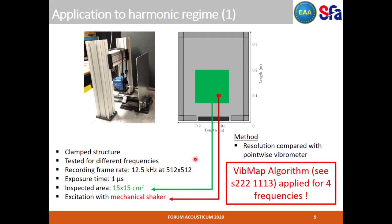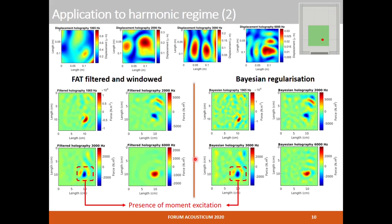The algorithm discussed in the previous talk permits to retrieve the operational deformations of the structure under harmonic excitation. To check if the proposed approach is adapted, the vibrations of a plate are measured for a set of four frequencies up to six kilohertz. The plate under test is steel, with edges damped to prevent resonances. The holograms are recorded at a frame rate of 12.5 kilohertz at high spatial resolution, and the illuminated surface is 15 by 15 square centimeters. The FAT method is applied to retrieve the position and values of the force for the two regularization methods at the four tested frequencies, and results are compared with scanning vibrometer measurements.